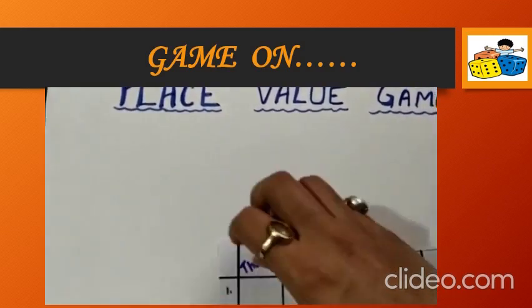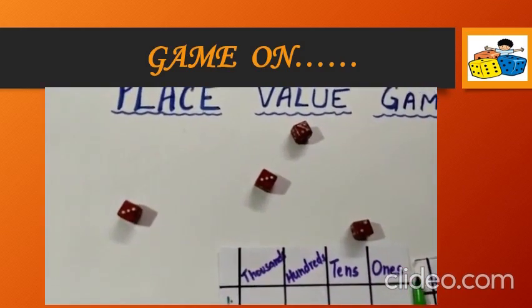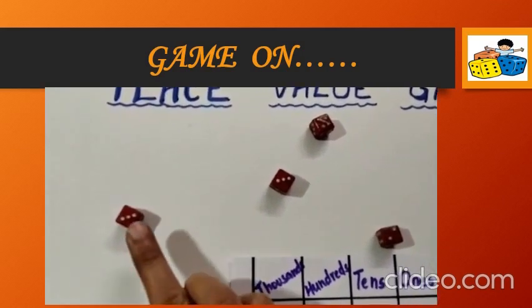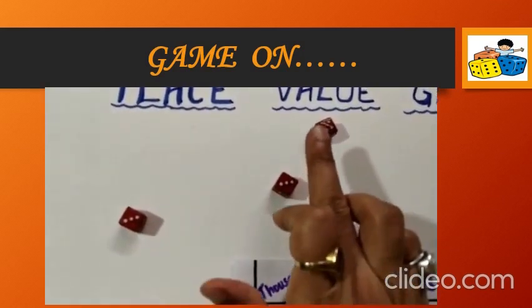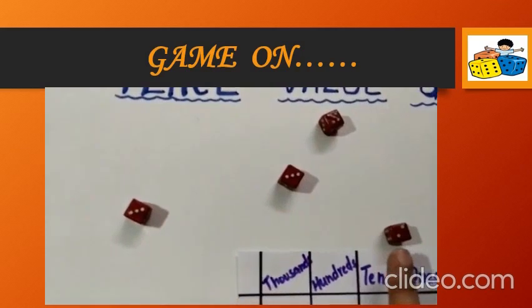So now we are going to roll our dice. And what are the numbers that we got? We got three, three, five and two.